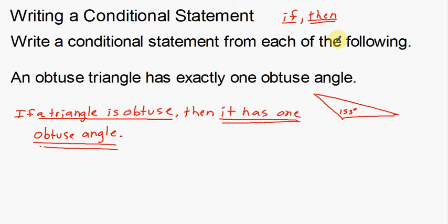That is how you write a conditional statement. Conditional statements can be difficult to write because you're not sure how to take each piece of the sentence and write it so that it's understood. I didn't want to write 'if an obtuse triangle' — that doesn't flow well. 'If a triangle is obtuse' flows a lot better. I also didn't use the word 'exactly,' though you could have included 'then it has exactly one obtuse angle' — it just wasn't a necessary part of the sentence.